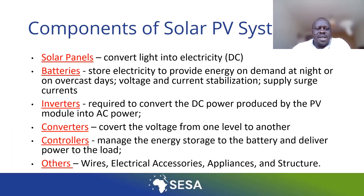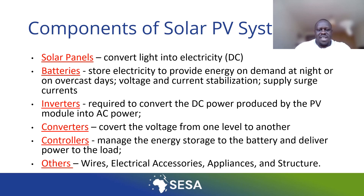The components of the solar PV system include solar panels, which convert light into electricity — primarily DC. We also have batteries for storing energy, inverters which convert DC to AC power, and converters which do conversion of one voltage level to another. There are also controllers to manage the charge flowing from the PV to the battery, and other balance-of-system components like wires and other accessories.